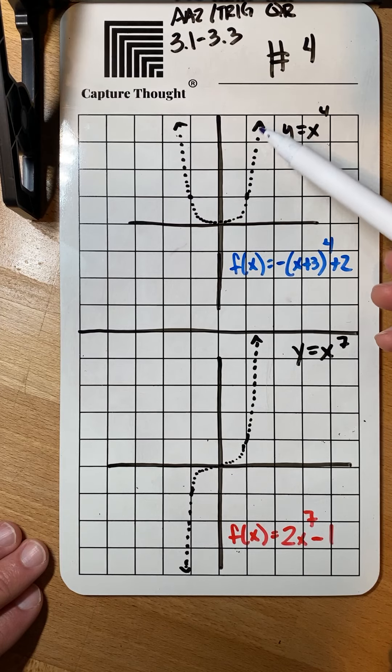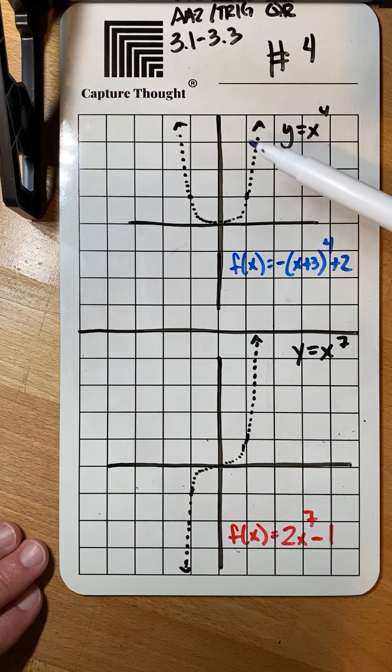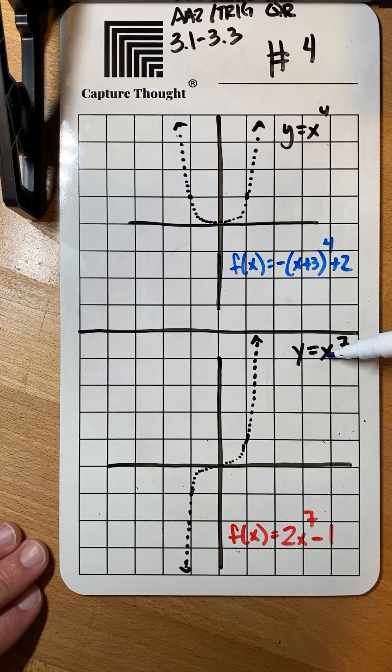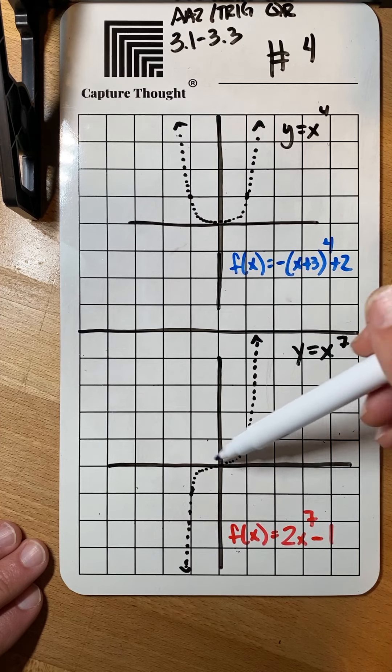Same thing here if it's a positive and an odd it's going to be rising to the right and falling to the left.